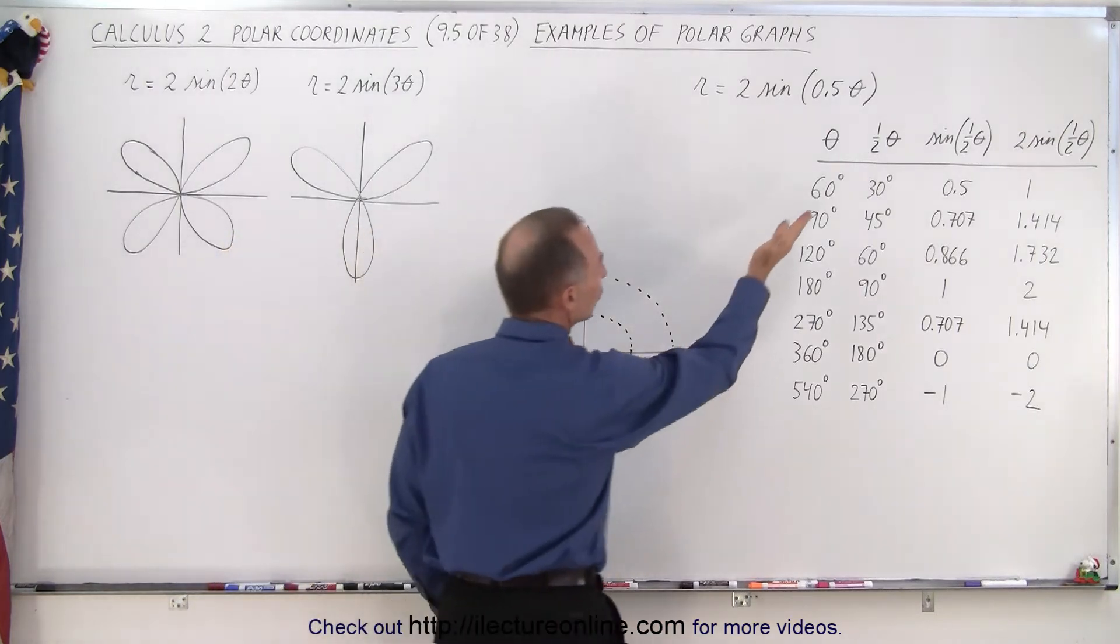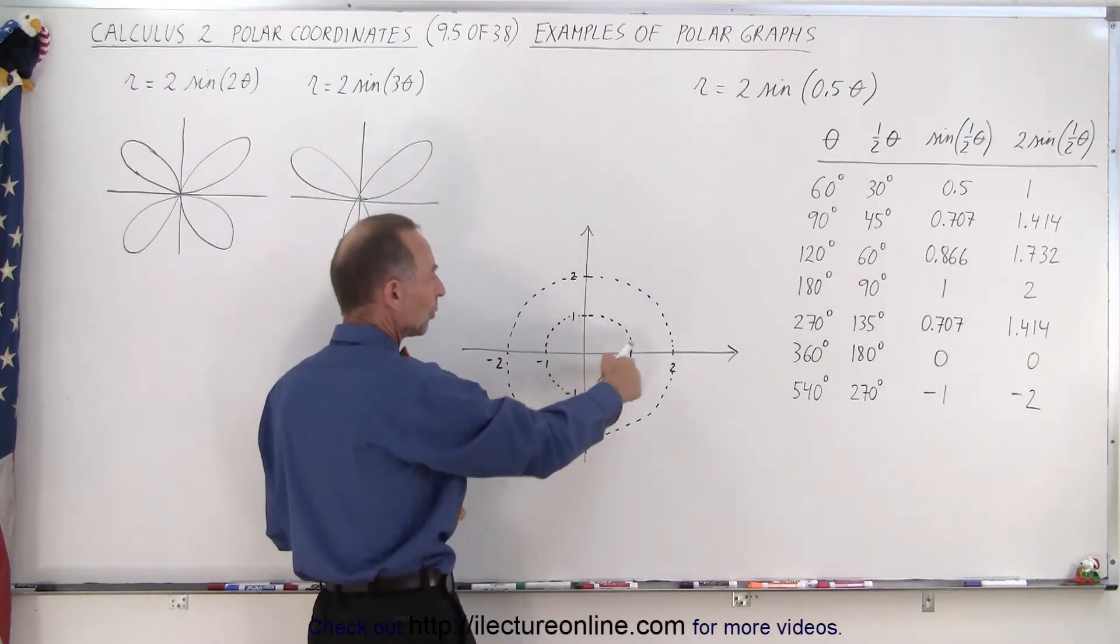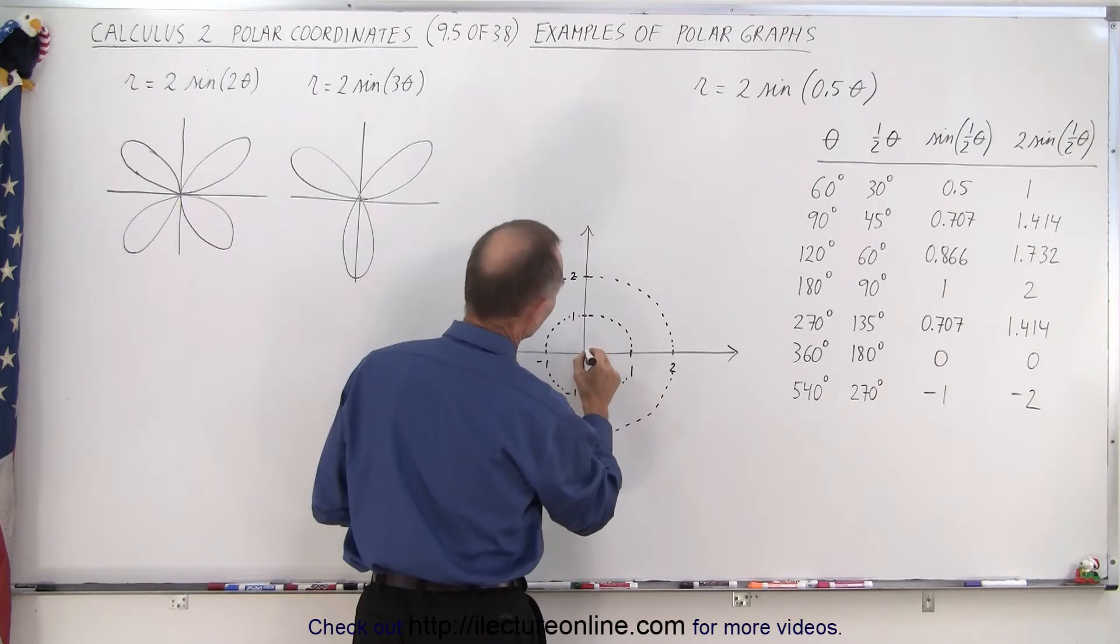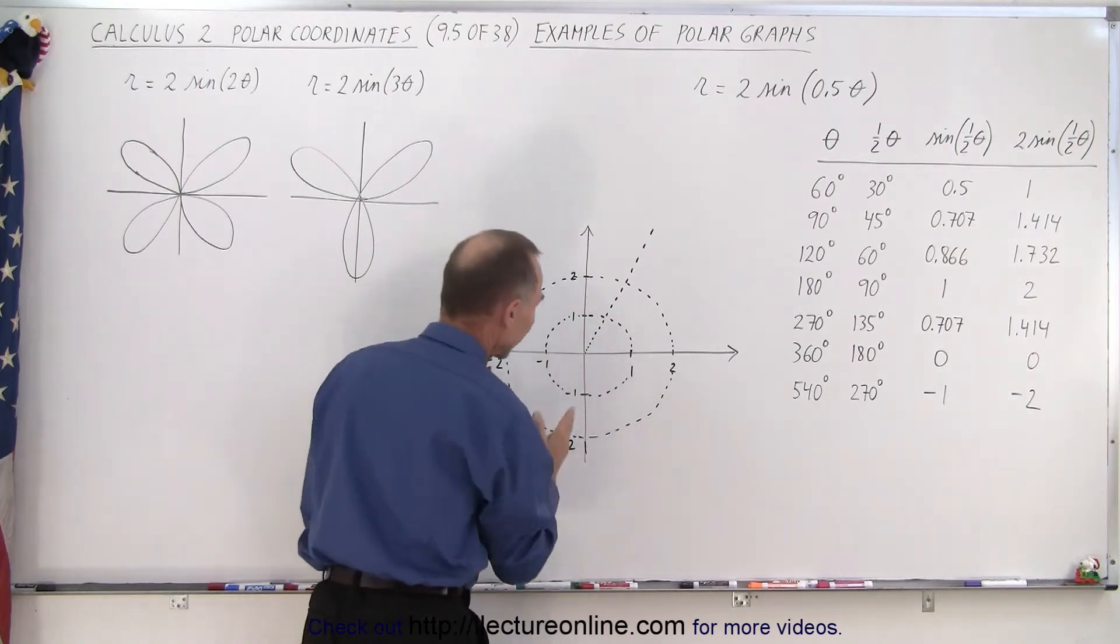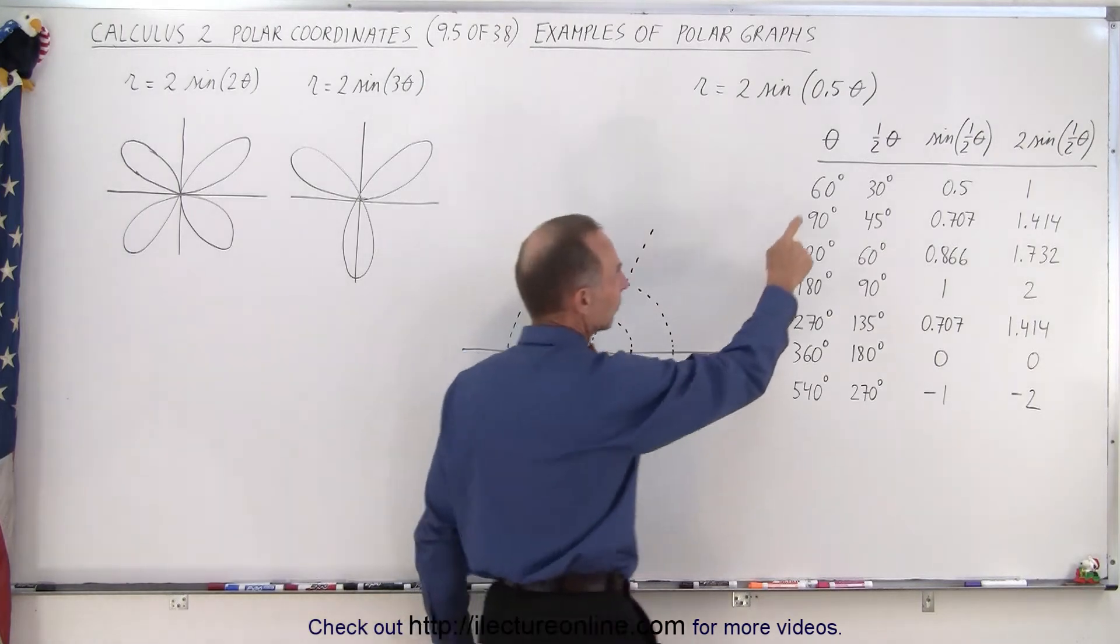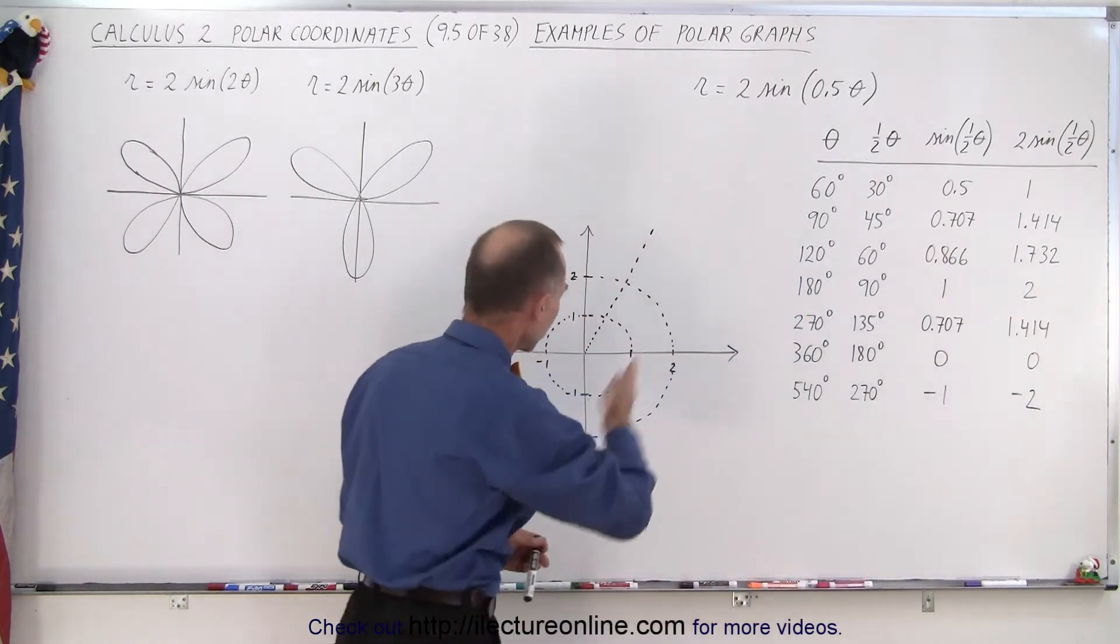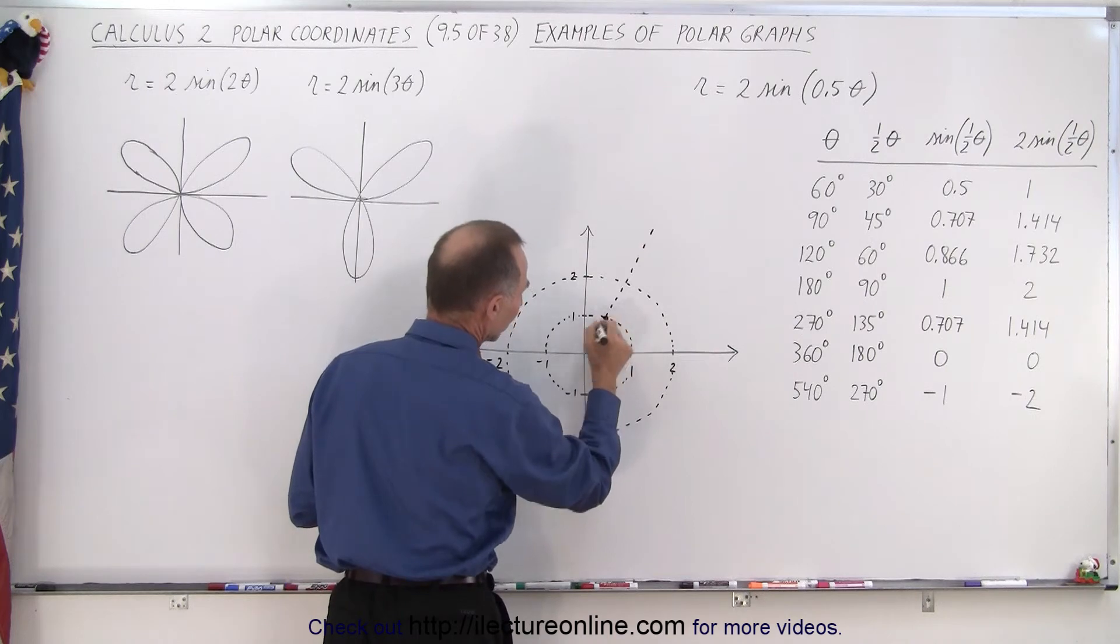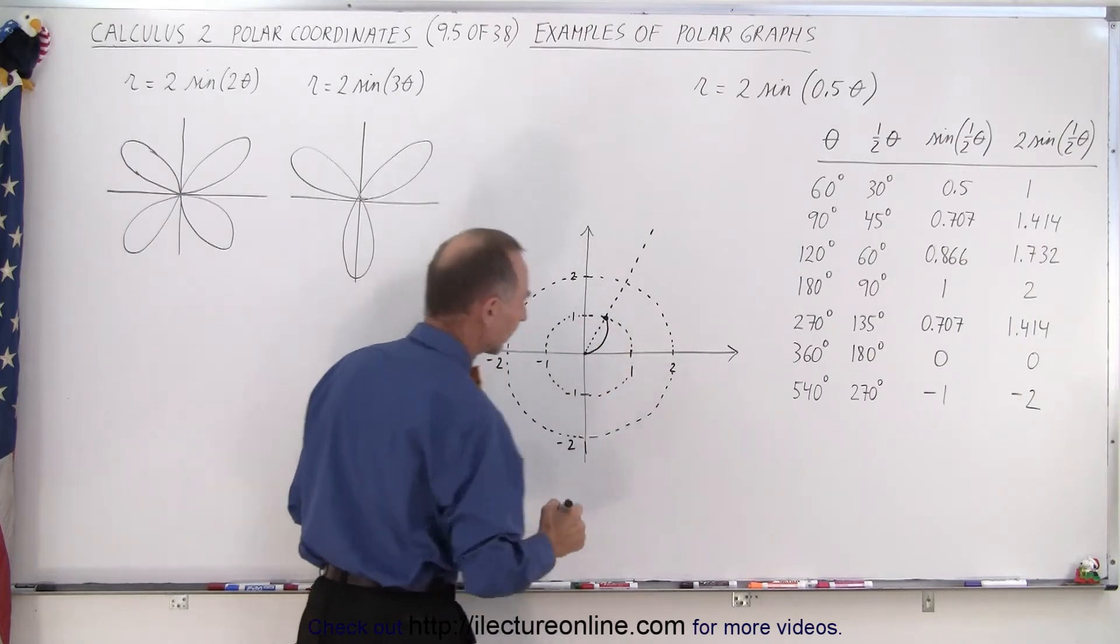The next angle we're going to try is 60 degrees. Notice that I've already drawn some circles, one with radius 1 and one with radius 2. An angle of 60 degrees is about in this direction right here. In that direction, you first divide by 2, then take the sine of 30 degrees which is 0.5, and then double it which is 1. So along that radius the distance from the origin would be 1. We start at 0 and you can see that somehow this would look kind of like that.